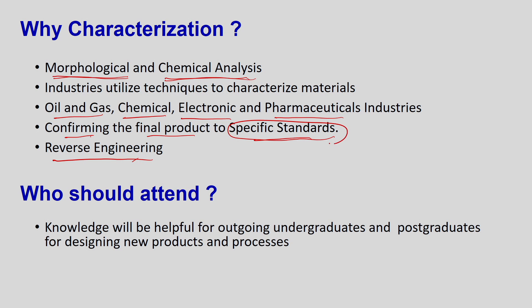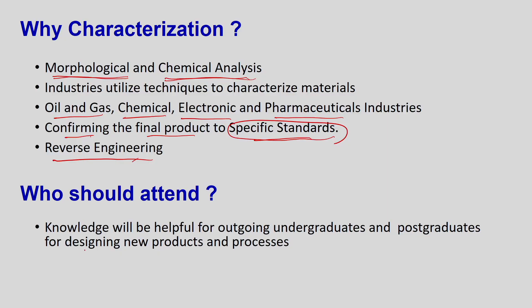Who should attend this course? Although the course is primarily designed for chemical engineers, the knowledge will be helpful for all undergraduates and postgraduates — whether in chemical engineering, materials science, civil engineering, or mechanical engineering. Basically, these four branches will benefit greatly from this course. Our main aim is to first design a new product, then characterize it, and with those characterization results, formulate an economical process.